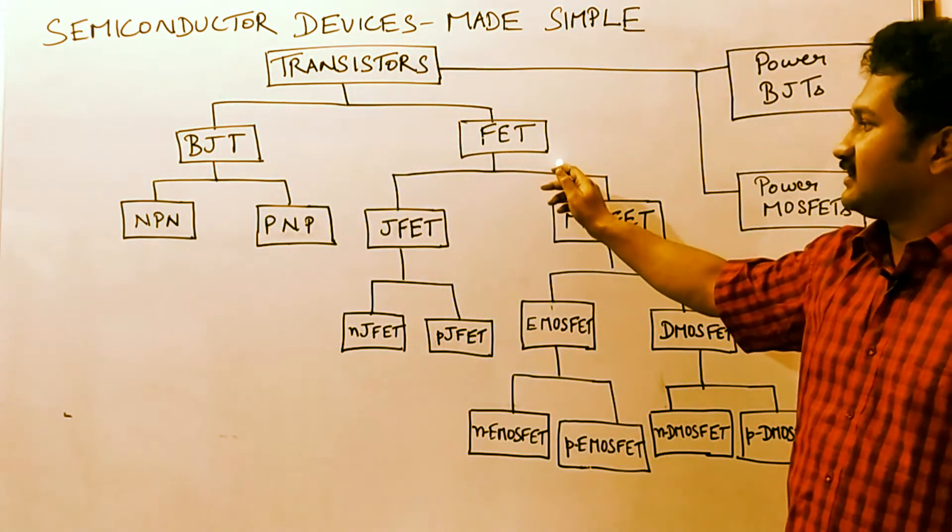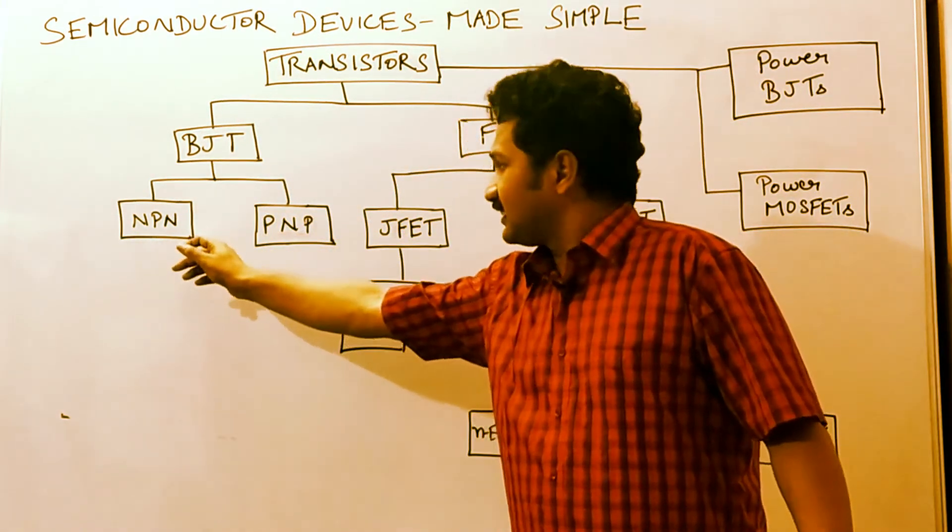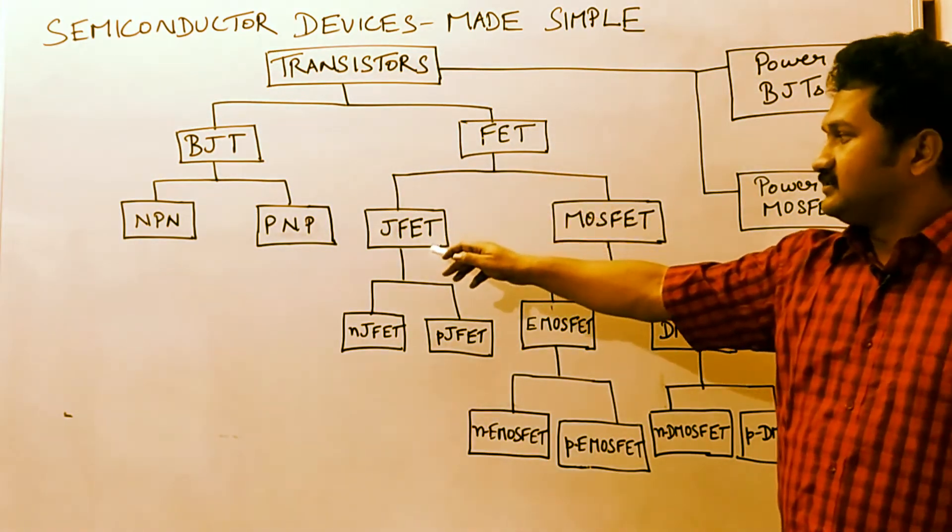Under bipolar junction transistor, there is NPN transistor and PNP transistor. Under field effect transistor, we have junction field effect transistor and metal oxide semiconductor field effect transistor.